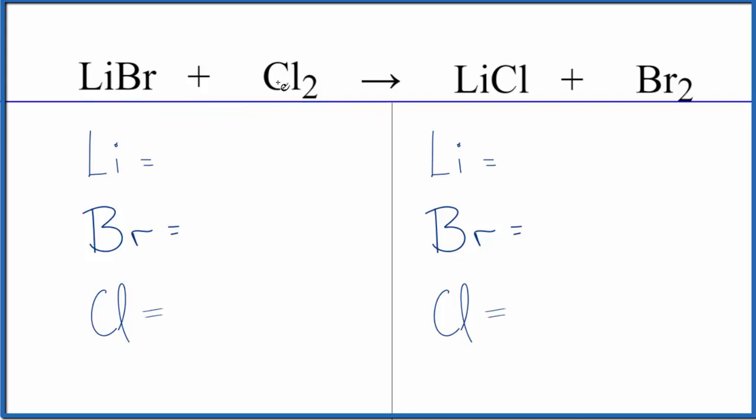So for the type of reaction, we can see that the chlorine has come in and pushed out the bromine. Now the bromine is all by itself, and this chlorine is bonded to our lithium. This is a single displacement reaction.